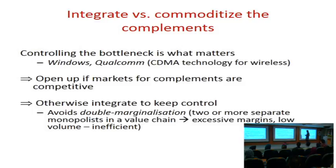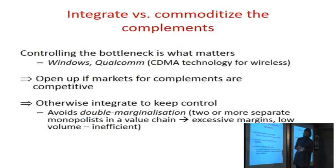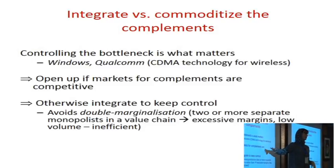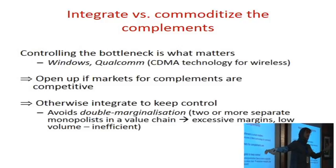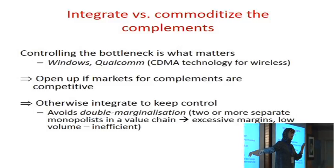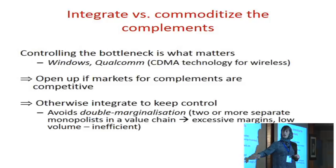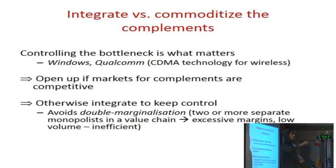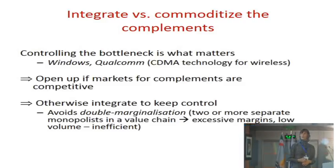The key to becoming a platform is to become a bottleneck in some industry — the central channel through which everyone has to go. Open interfaces in areas where there's a lot of supply and competition. If there's an existing industry that could enhance your platform, open it up and charge for access. But if there's no competition or you're the leading provider, provide that component yourself and keep control of key complements — especially rare, unique ones.